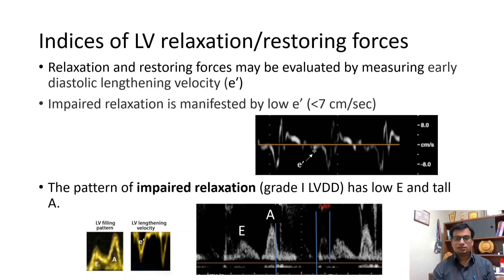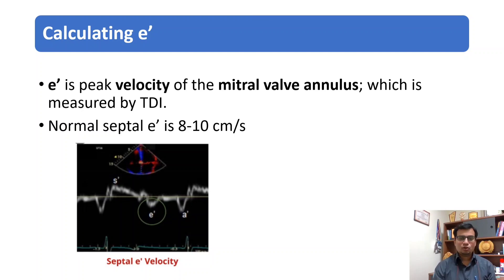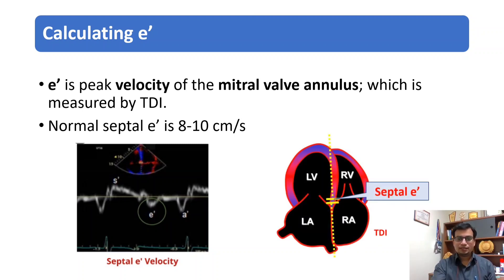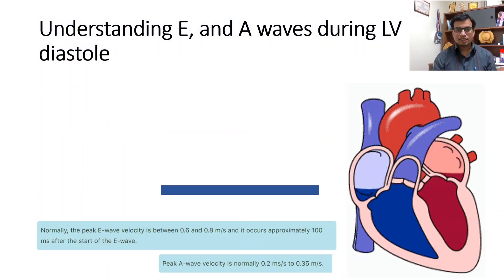We study the LV inflow pattern by assessing the E and A velocities. E' velocity reflects the rate of LV relaxation during diastole. This is measured using tissue Doppler imaging. There are two types of E': septal E' and lateral E'. Commonly we measure the septal E'. Normal septal E' is about 8 to 10 cm per second.